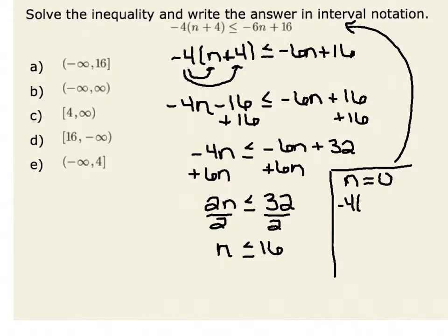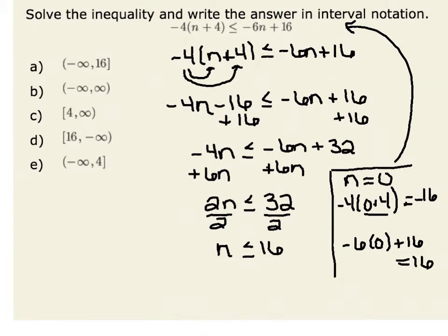Therefore, negative 4 times the quantity 0 plus 4 — we want to know if that is less than or equal to negative 6 times 0 plus 16. Let's check. 0 plus 4 is 4. Multiply that by negative 4 is negative 16. On the right-hand side, we have negative 6 times 0, which is 0 plus 16, which equals positive 16. And indeed, negative 16 is less than or equal to positive 16.